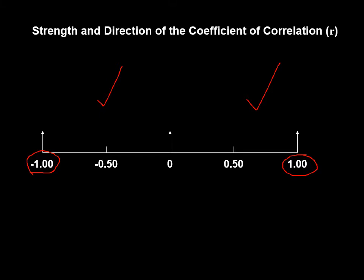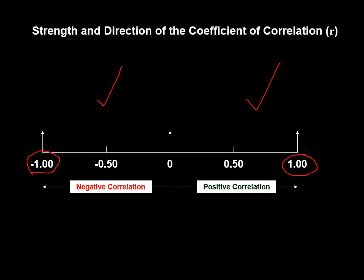What's a good number? Numbers between 0.5 and 1 on either side are considered strong; close to 0.5 is moderate; below that is weak. Again, the correlation coefficient must be read within the context of your work.